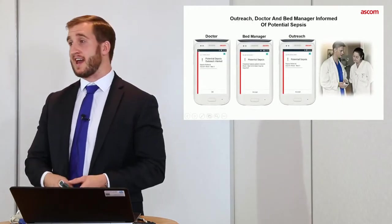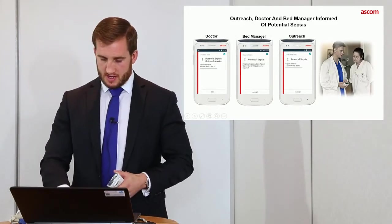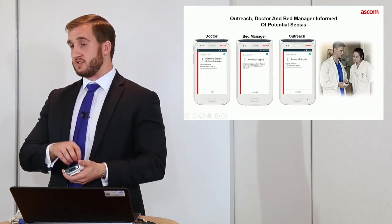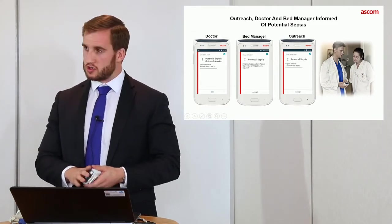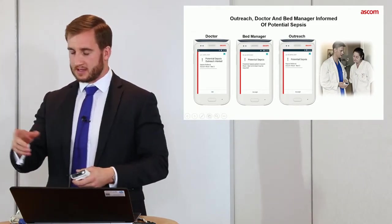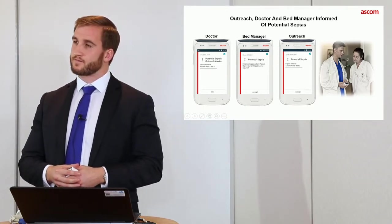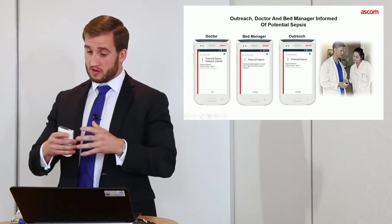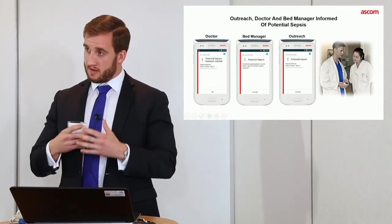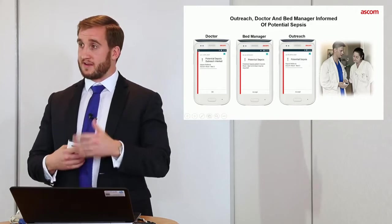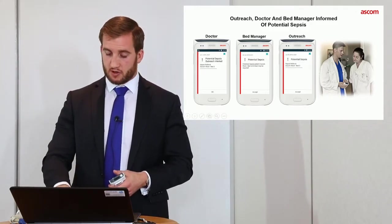So we now have three handsets going off. What we now have is information has been sent to three people at the same time. This is for information purposes for two of you. So the doctor, can you read what your handset says? Potential sepsis, outreach alerted. So ultimately you are responsible for this patient, which is why you've now been given this information. At the moment it is purely information. You will have to deal with that at a later date if we need to escalate it further.